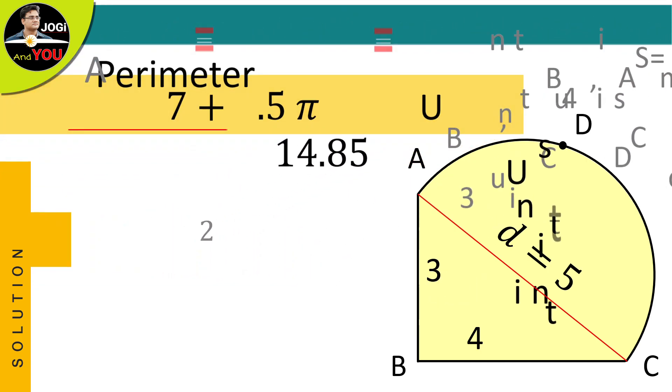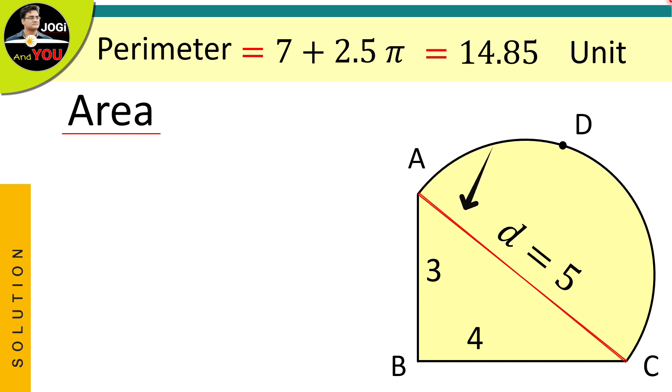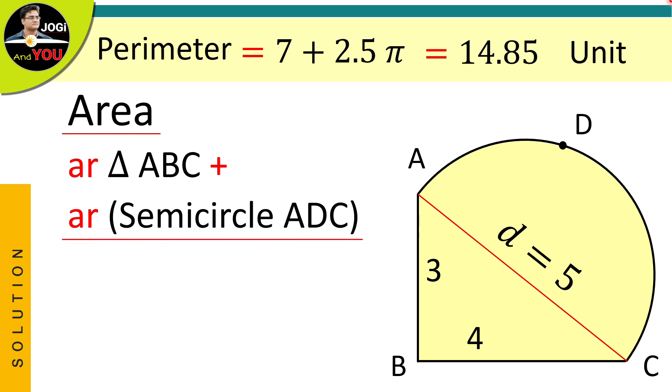Now, let us talk about the area of this shape. To find the area of this complex shape, we divide this into two simple parts with the help of this line: a right-angled triangle ABC and a semicircle ADC. And if we add the areas of these two shapes, we will get the total area of the given complex shape.